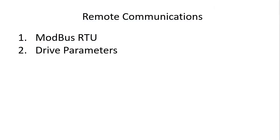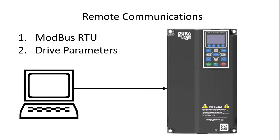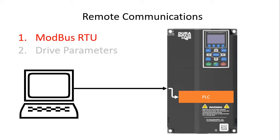There are two ways you can communicate with the GS4 variable frequency drive's built-in PLC. The first way is using Modbus RTU. The drive and the PLC have different Modbus addresses, so you can simply configure your controller to talk to the two different addresses via the drive's Modbus port.